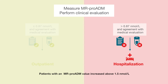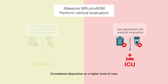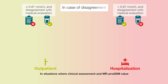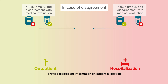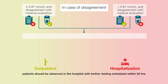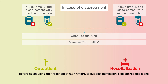Patients with an MR-PROADM value increased above 1.5 nmol per litre have an elevated risk for progression to a more severe disease — consider disposition to a higher level of care. In situations where clinical assessment and MR-PROADM value provide discrepant information on patient allocation, patients should be observed in the hospital with further testing scheduled within 24 hours, before again using the threshold of 0.87 nmol per litre to support admission and discharge decisions.